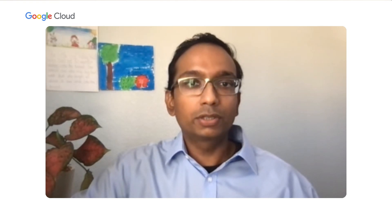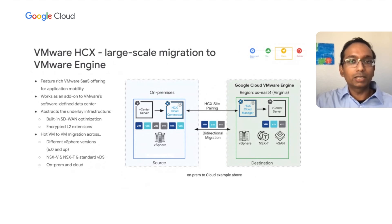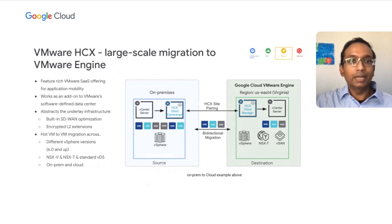Many customers want to migrate their VMware workloads to a native vSphere environment running in the cloud to increase agility and reduce costs. Google Cloud VMware Engine solves this problem and gives you a fast forward to your journey to the cloud. It is one of the fastest ways to migrate your VMware applications to the cloud, and VMware HCX is the tool that enables this. It's provided as part of VMware Engine and abstracts the underlay infrastructure, offering hot, cold, and warm migration options in bulk.